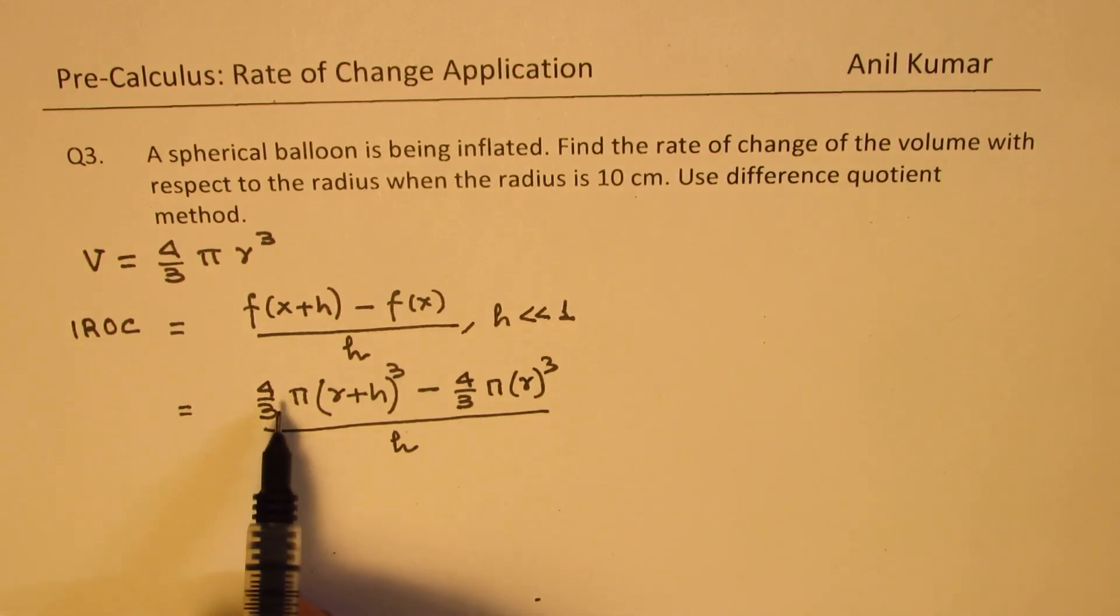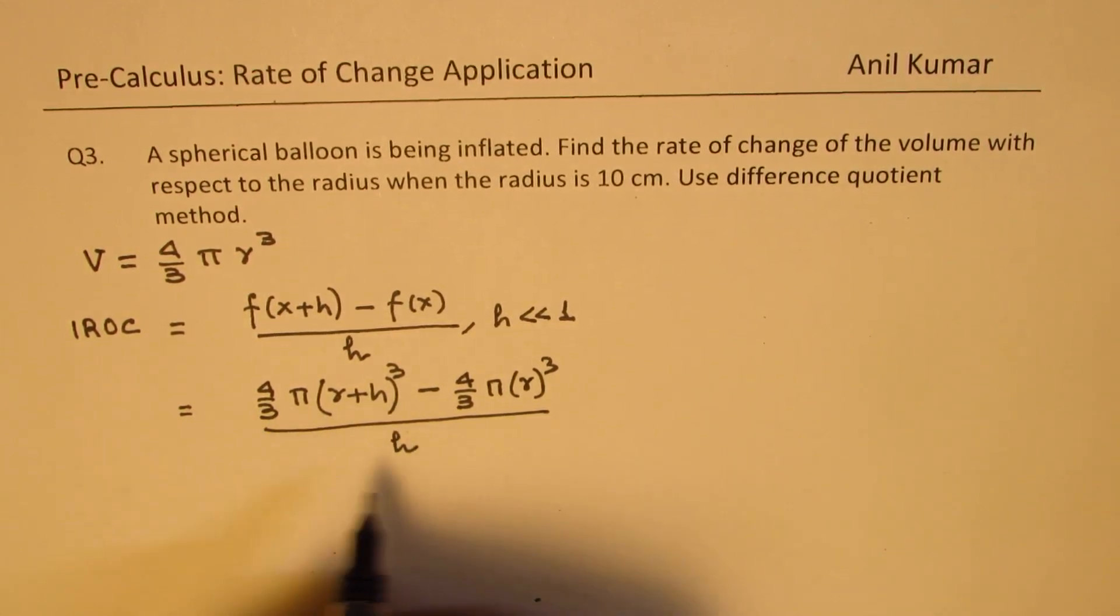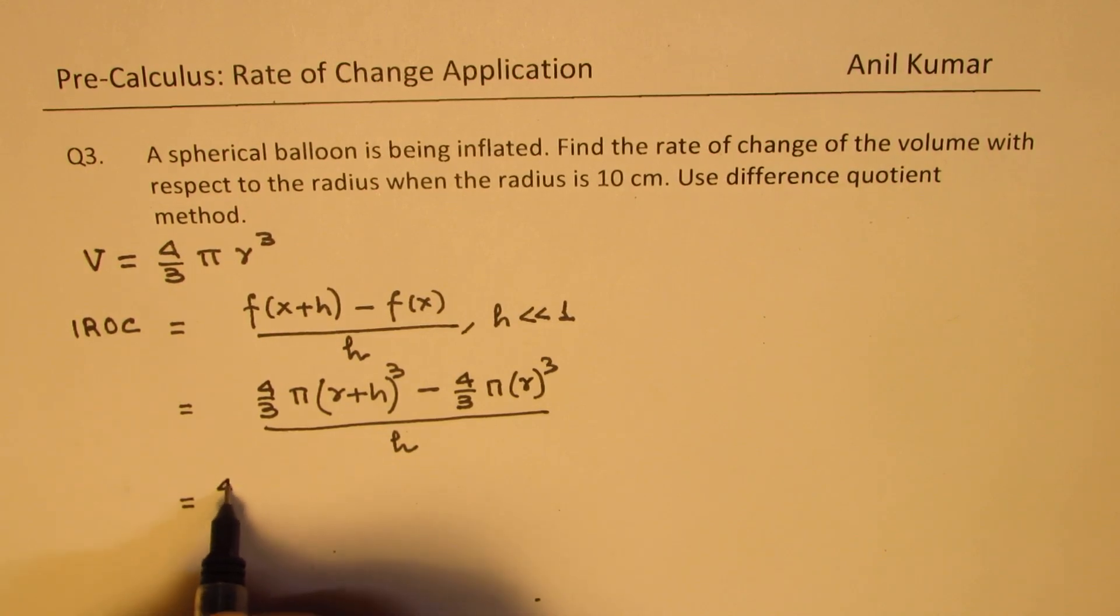Now you see 4 by 3 pi is a common factor. So we can always take this as common. We can write this as 4 by 3 pi over h.